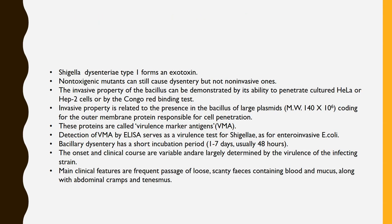Shigella dysentery type 1 is caused by an exotoxin released by the Shigella bacilli. Non-toxic mutants can still cause dysentery, but not non-invasive ones. The invasive property of the bacillus can be demonstrated by its ability to penetrate cultured HeLa cell lines or Hep-2 cell lines, or by the Sereny test. Invasive property is related to the presence of a large plasmid with molecular weight of 114 x 10^6, coding for outer membrane proteins responsible for cell penetration. These proteins are called virulence marker antigens (VMA). Detection of VMA by ELISA serves as a virulence test for Shigella, as well as for enteroinvasive E. coli.